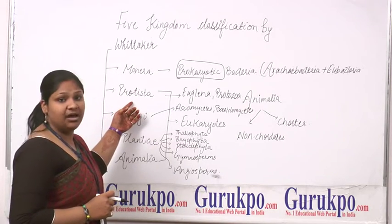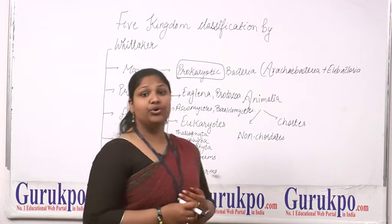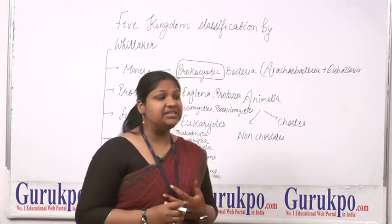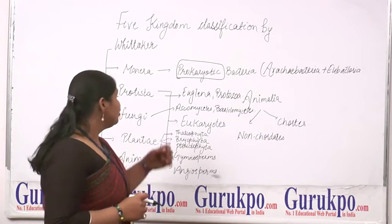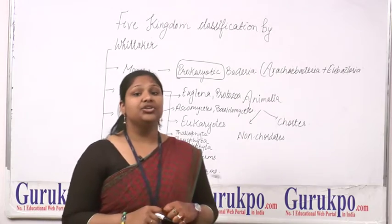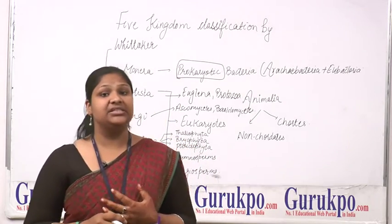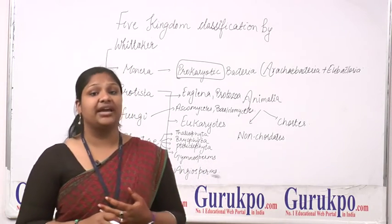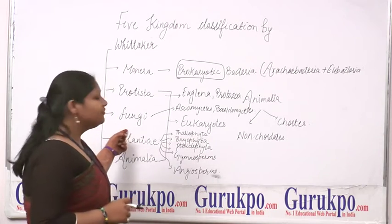Next is Protista. Protista includes all the euglenoids, protozoans, and dinoflagellates — basically all organisms that are eukaryotic. These include Euglena, dinoflagellates, and protozoans such as Plasmodium and various kinds of similar organisms.